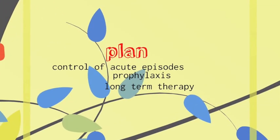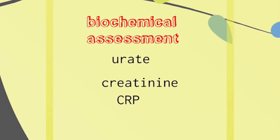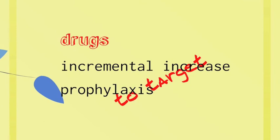For review patient assessment, the patient will usually be on a plan that includes control of acute episodes, prophylaxis, and long-term therapy — all three elements need to be addressed at each visit. Document the number of acute attacks and joints involved, and hopefully that number diminishes or goes to zero quickly after introduction of therapy. Perform a biochemical assessment for uric acid, creatinine, and CRP. Note whether you need to do an incremental dose increase and whether to continue prophylaxis. If the target uric acid has been achieved and there have been no acute episodes for a number of weeks or months, prophylaxis can be reduced or withdrawn.